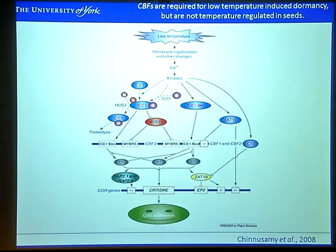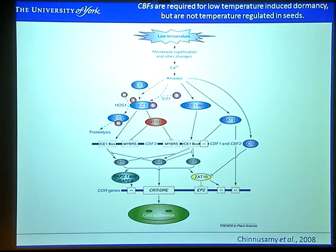In vegetative tissues, there are two main mechanisms important for sensing low temperatures. Firstly, the expression of the CBF transcription factors — CBF3, 2 and 1 — that are part of the cold acclimation pathway. They promote expression of core genes that lead to downstream effects allowing plants to survive cold temperatures. Secondly, the chromatin reorganisation of the FLC locus is also important for low temperature signalling.